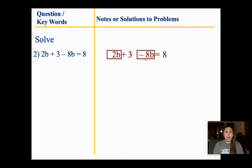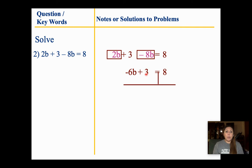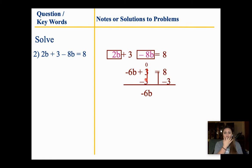So 2b minus 8b — different signs, so I'm going to subtract. 8 minus 2 is 6, but because the 8 is bigger, we're going to have a negative 6b. I didn't do anything with my 3, so I bring that down. Equals 8. Now again, we have a two-step equation. I noticed I'm going to have to move this 3 over because those would be like terms, so I subtract 3 from both sides. 3 and negative 3 cancel each other out, giving me 0, equals 8 minus 3, which is 5.